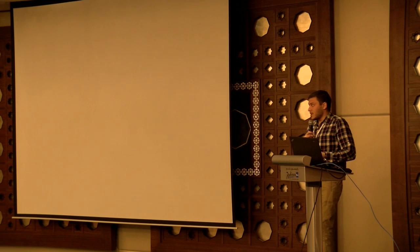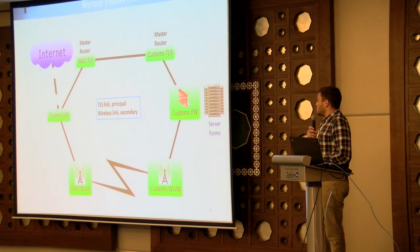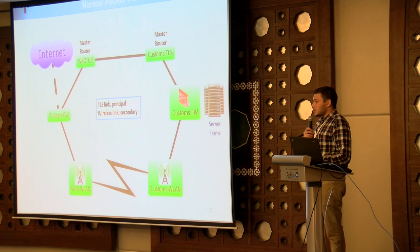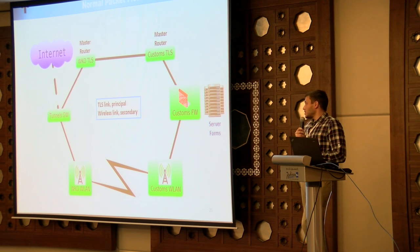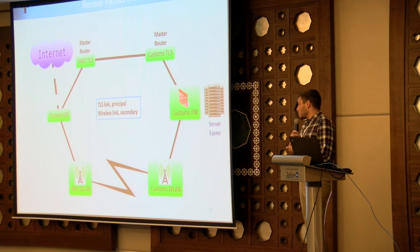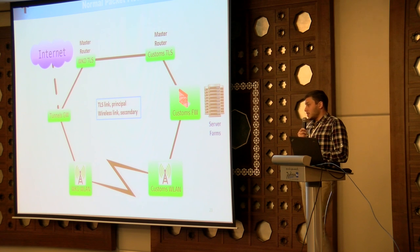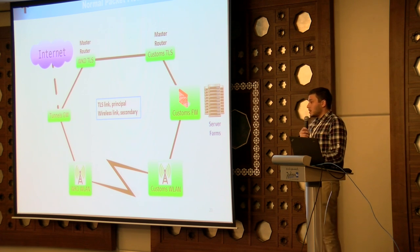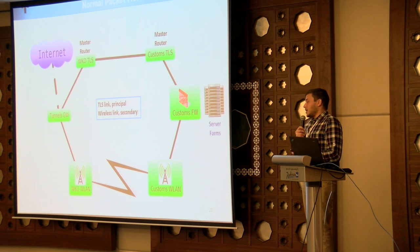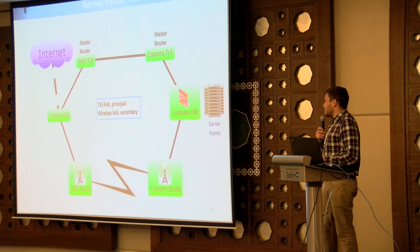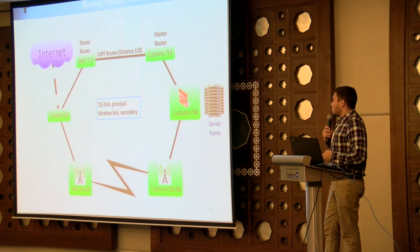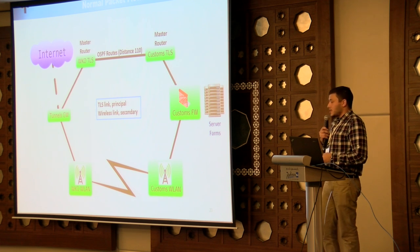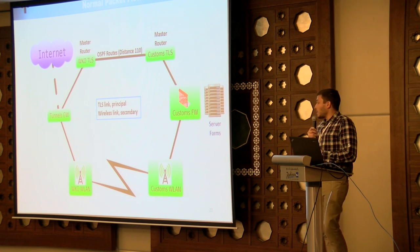Let's see how this works. The transport layer service — the fiber optic link — is the primary path, and the wireless link is the secondary. The two routers handling the transport layer service are the VRRP masters, so we have OSPF routes with an administrative distance of 110 and the packet flow follows accordingly.